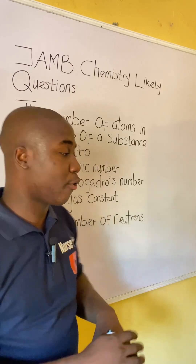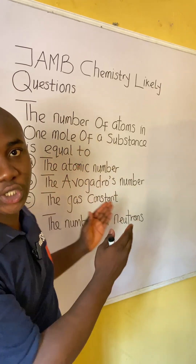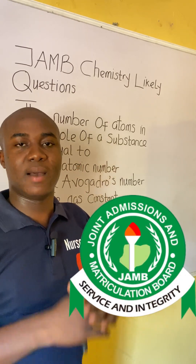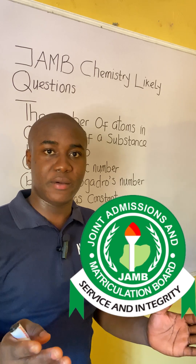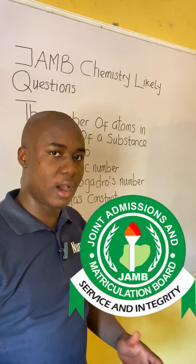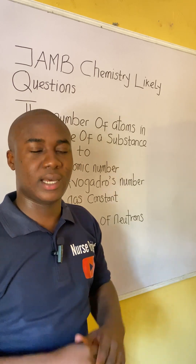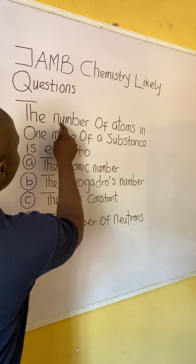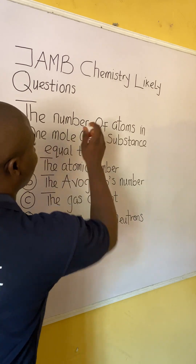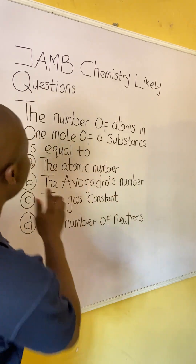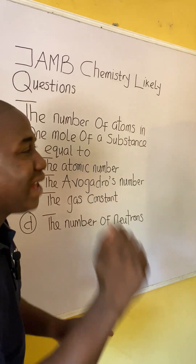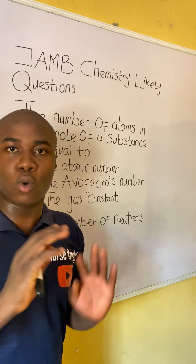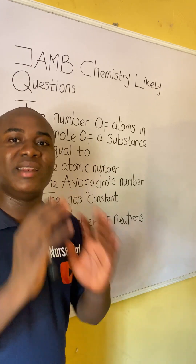Let's say you came across this question in your JAM exam. How will you solve it? It is very easy. Now let's solve together. The question says: the number of atoms in one mole of a substance is equal to what?